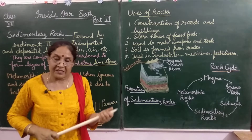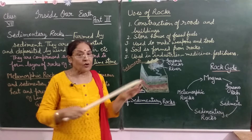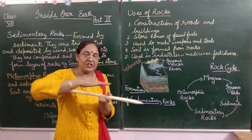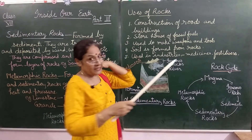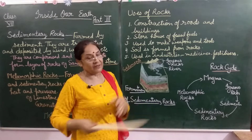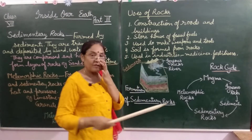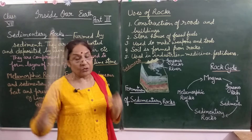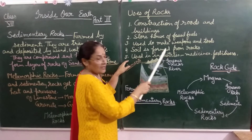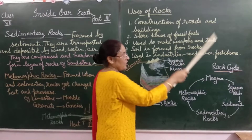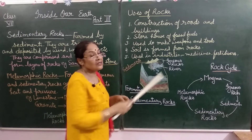Remember, fossils are found in sedimentary rocks because organisms get trapped between two layers. Other uses of rocks include: they are used to make weapons and tools; soil is formed from rocks — alluvial soil carried by rivers as silt and mud; rocks are used in industries, medicine industries, and fertilizers; and some rocks are used for jewelry making.